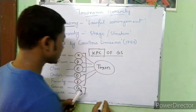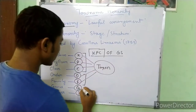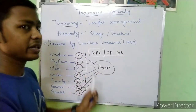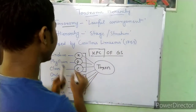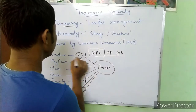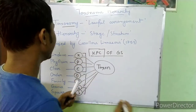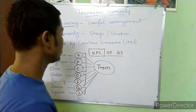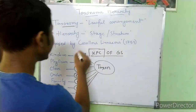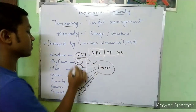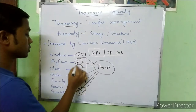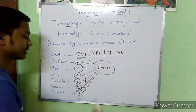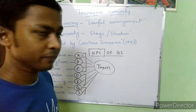Each and every stage separately is a taxon. For example, Kingdom is a taxon, Phylum is a taxon, Class is a taxon, Order is a taxon, and so on. So every level in the taxonomic hierarchy is individually referred to as a taxon.